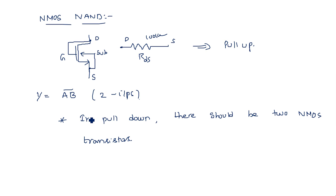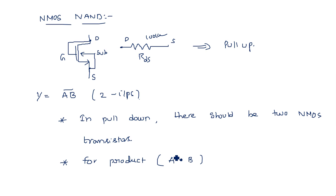For NAND operation — whether the two pull-down transistors are connected in parallel or series? For product operation, A dot B, the transistors in the pull-down network must be connected in series. By default, MOS technology gives a complemented output at the first stage itself without any additional complementing action.